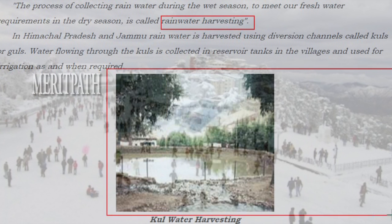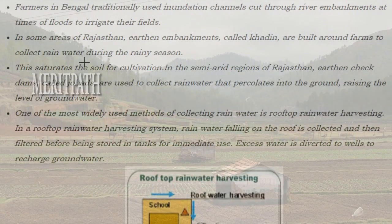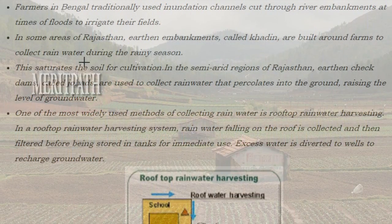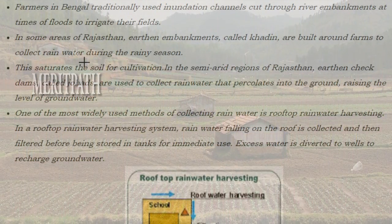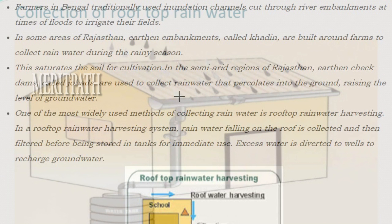Farmers in Bengal traditionally used inundation channels to divert river water from embankments during floods to irrigate their fields. In some areas of Rajasthan, earthen embankments called khadins are built around farms to collect rainwater during the rainy season, saturating the soil for cultivation. In the semi-arid regions of Rajasthan, earthen check dams called johads are used to collect rainwater that percolates into the ground, raising the level of groundwater.